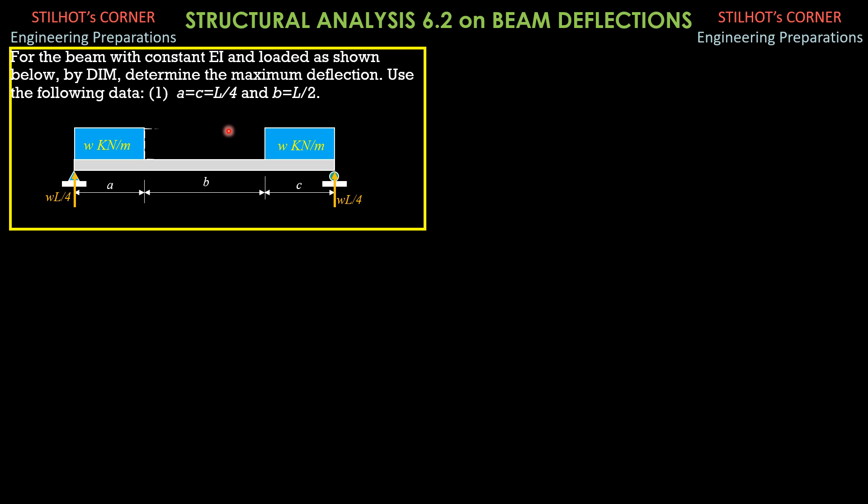So, extending up to this section here, so we also counter that extension of the load and this is W also. The distance to this section from the left support from the origin is X as shown in the figure. So, EI Y double prime therefore is W times L over 4 times X plus W times X minus A or X minus L over 4, moment arm is X minus L over 4 over 2, then minus W times X times X over 2.